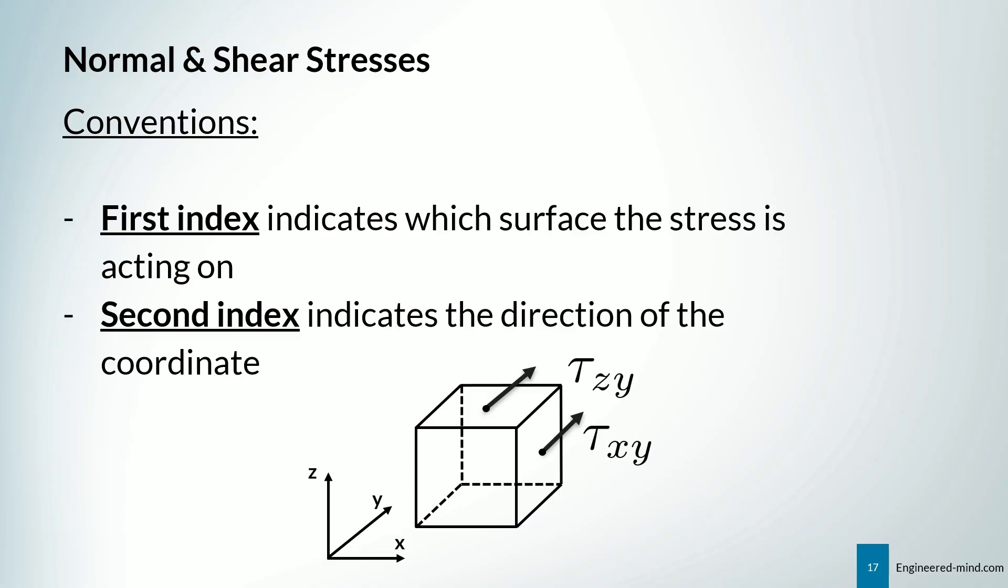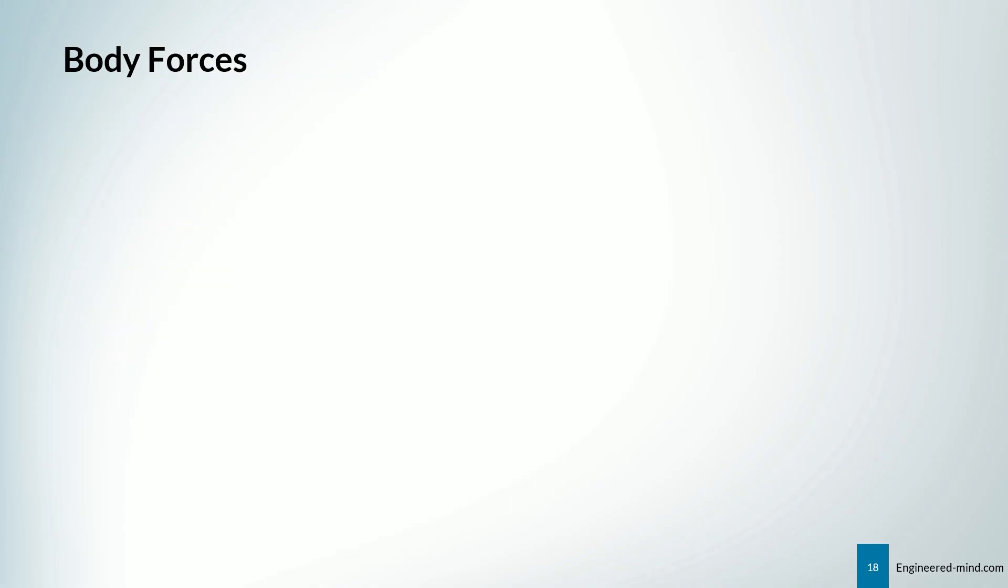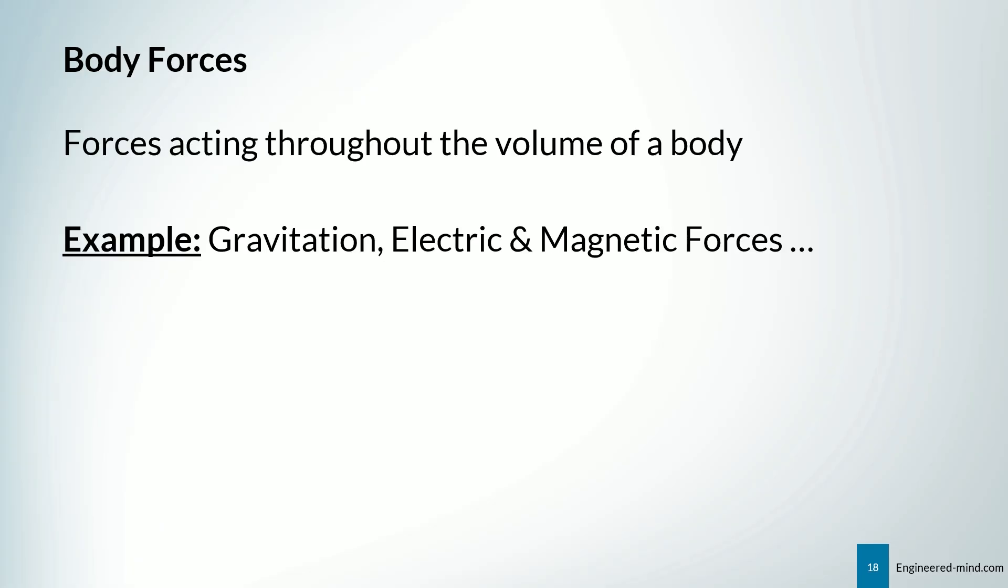Similarly, we have tau xy because it's acting on the x surface, but pointing into the y direction. We have also body forces, and these are forces acting throughout the volume of a body. For example, we have gravitation, electric and magnetic forces, and some more.